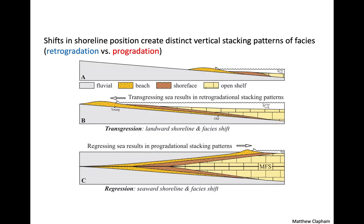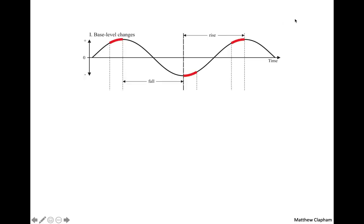Here's what that's going to look like. We'll have a vertical stacking pattern of facies, reading from bottom to top using superposition, which deals with Walther's Law of facies. The horizontal distribution of facies will stack vertically in the rock record. Here is our model of base level change: we have sea level rise, base level rise, base level fall, and base level rise through time.